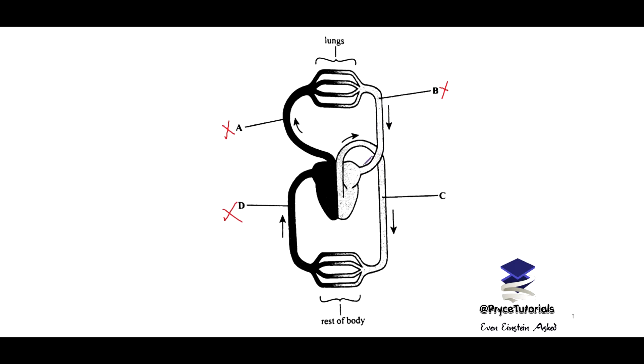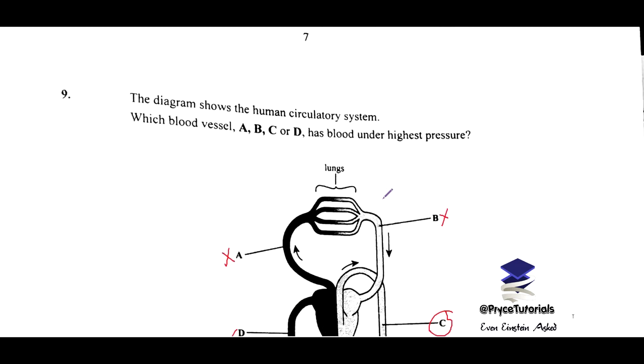And then it moves to the heart, back to the heart, and then it is pumped. Now this time it is pumped such that it reaches all parts of the body. So you expect C here, this region C to be under the highest pressure. So we select C.